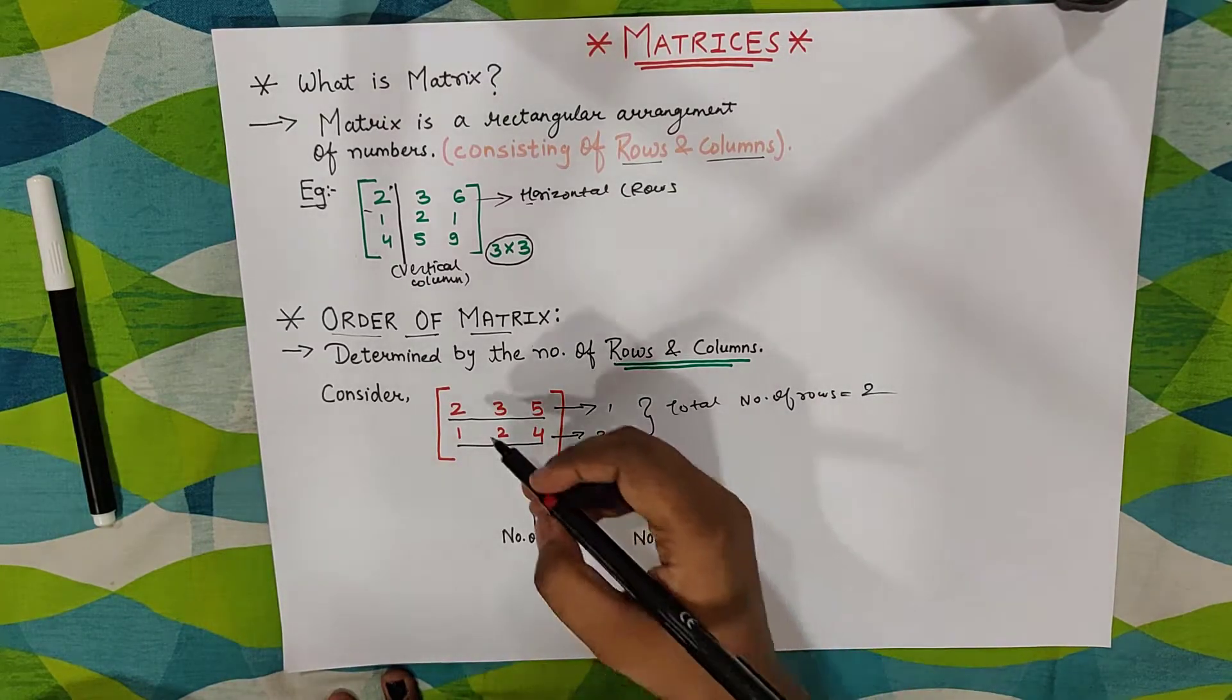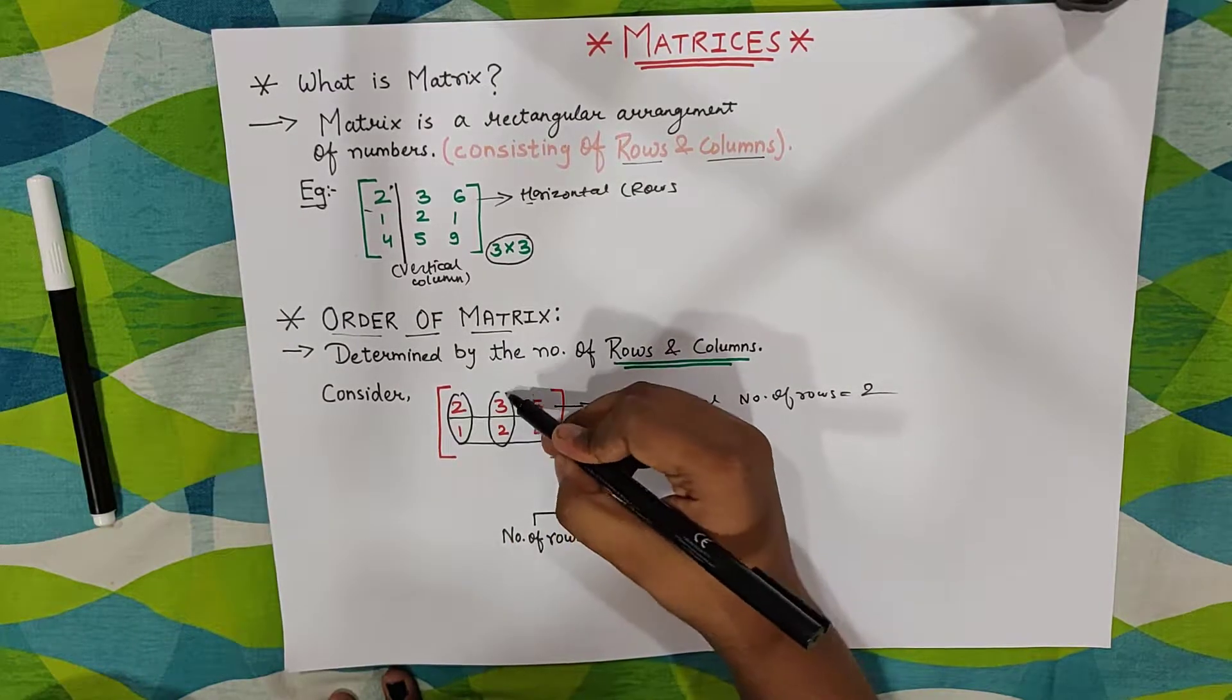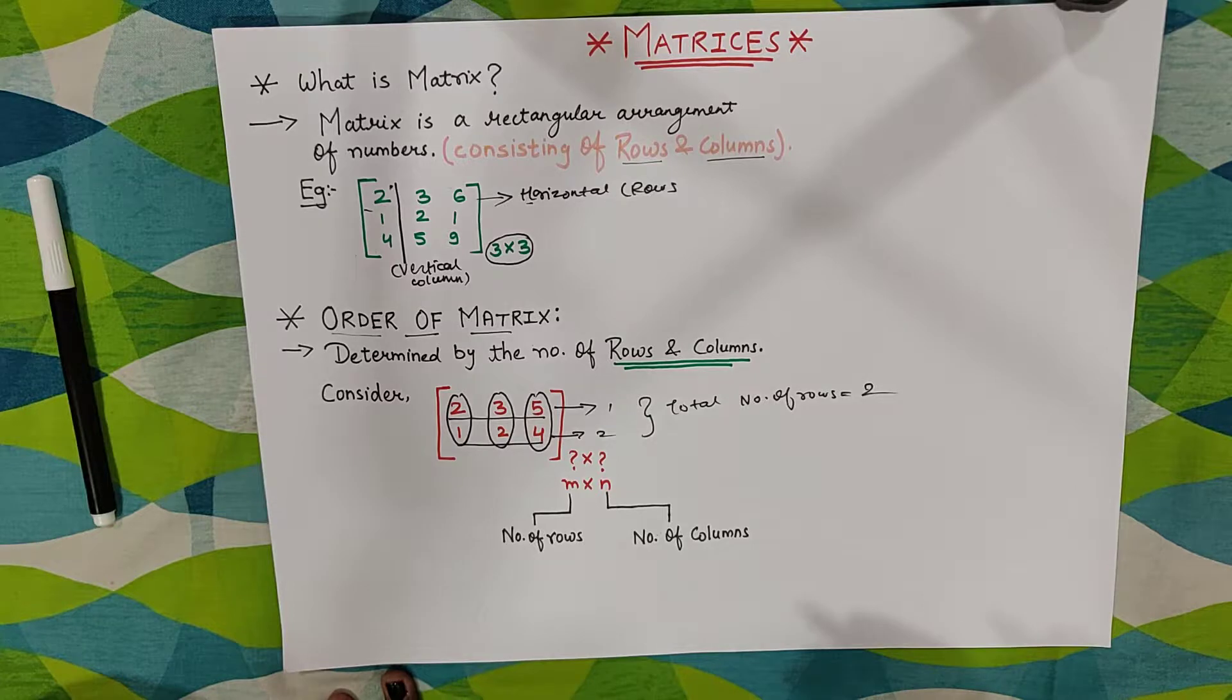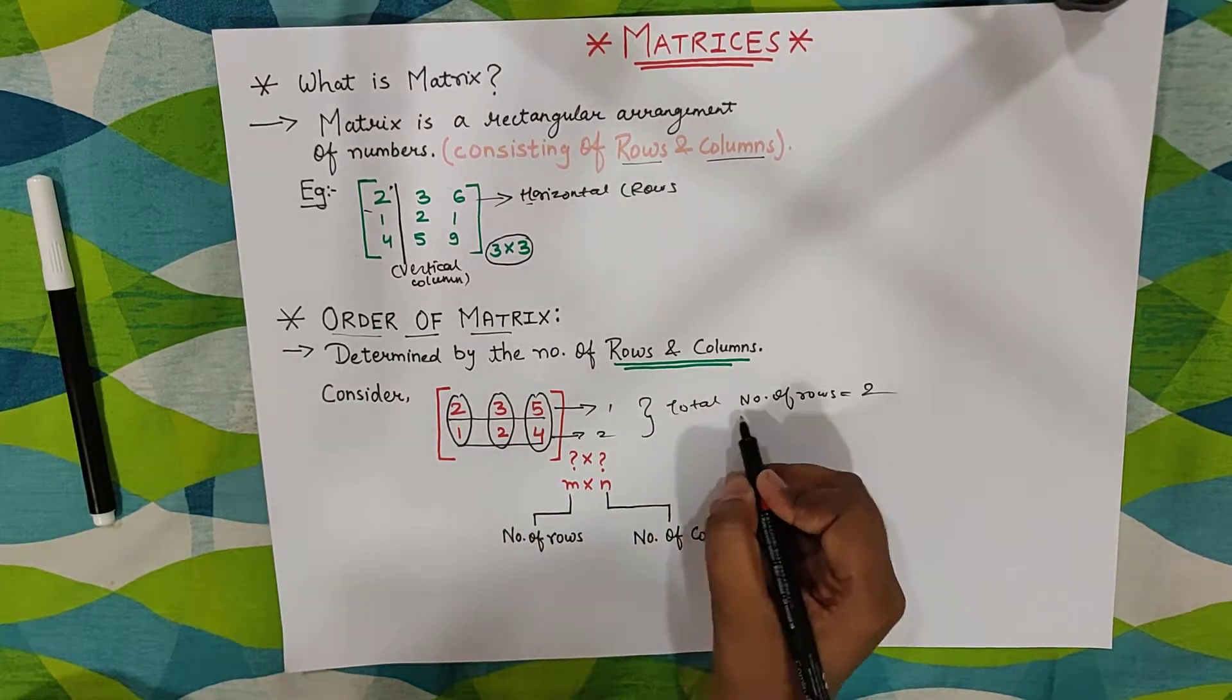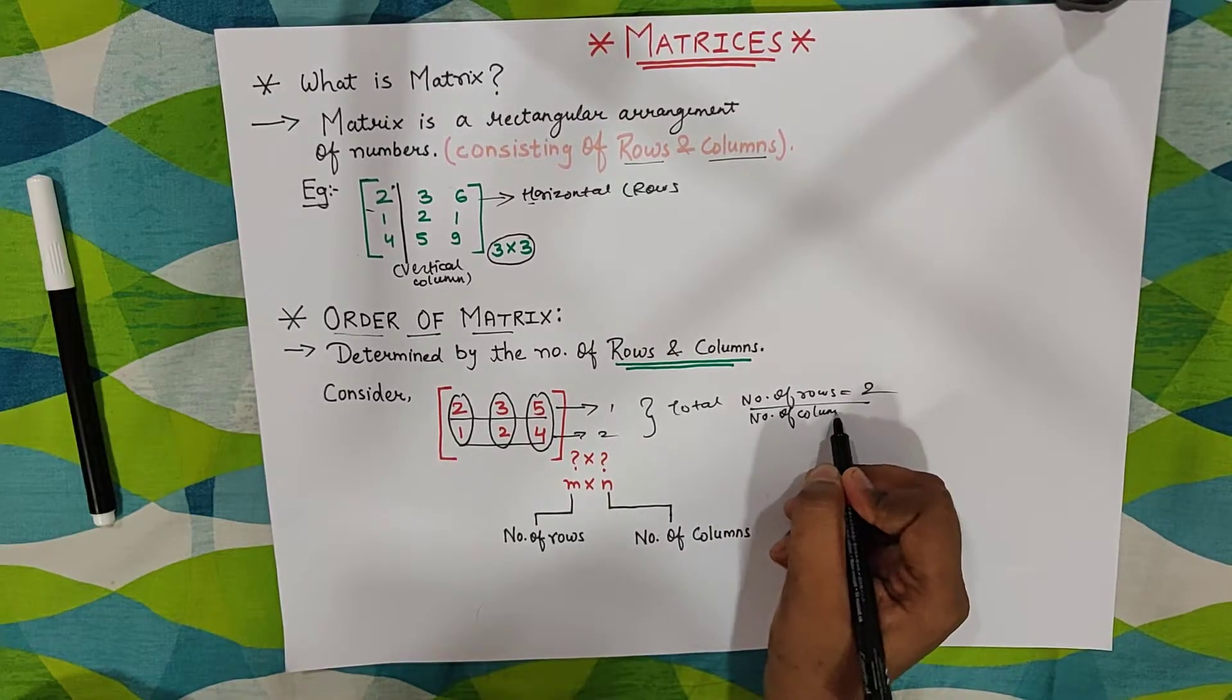Now let's come to the column part. This is my first column. Second column. And then we come to the third column. How many columns are there guys? Three. We have three columns. So total number of rows are two, and number of columns is equal to three.